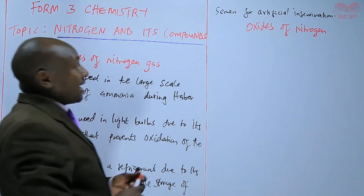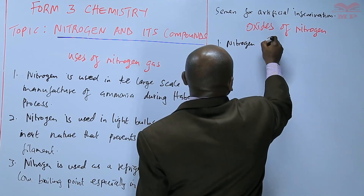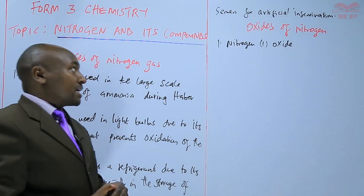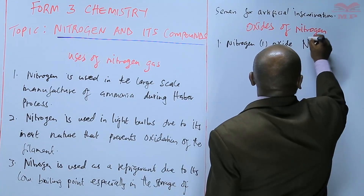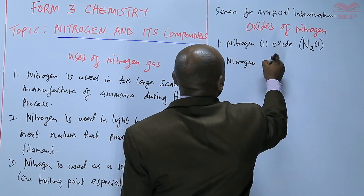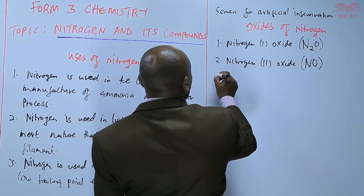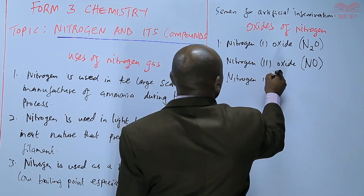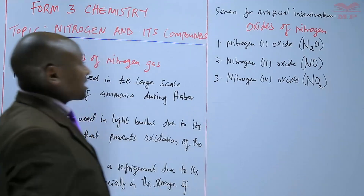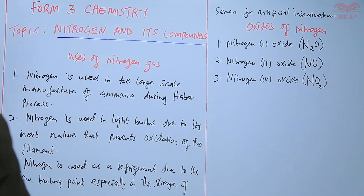Basically, nitrogen has three common oxides. Number one, we have what is called nitrogen one oxide. These are compounds of nitrogen — not pure nitrogen, but nitrogen compounds. They are nitrogen oxides. We also have nitrogen two oxide, and then we have nitrogen four oxide. Those are the oxides of nitrogen — compounds of nitrogen and oxygen. We will start with the first one: nitrogen one oxide.